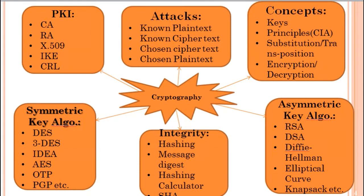PKI involves secret messages used to encrypt or decrypt our message — converting readable messages into non-readable form. Cryptography works on these principles, and there are two basic techniques used for converting our message: substitution technique and transposition technique. Encryption and decryption are the processes by which we convert plain text into non-readable message, or non-readable message back into plain text.